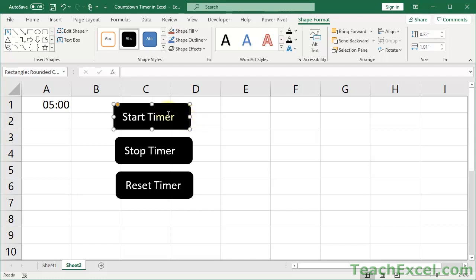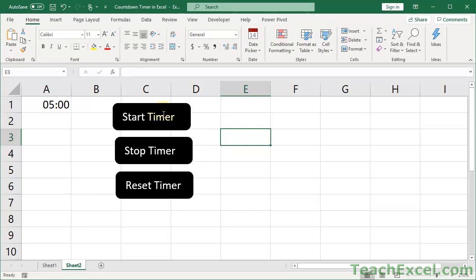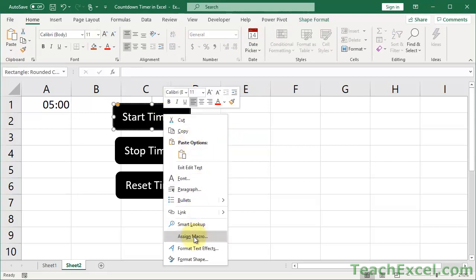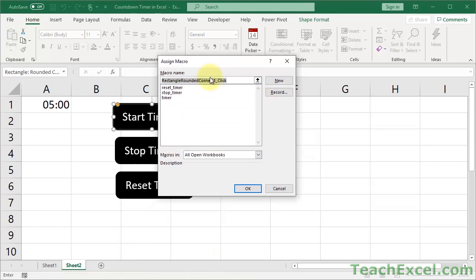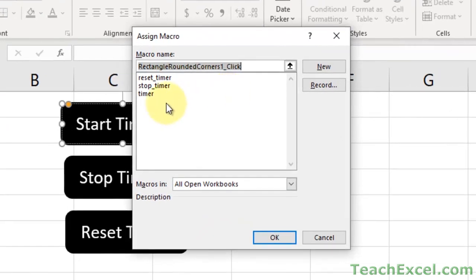And now what you have to do is to assign the macros. So just right-click a button. Go to Assign Macro. And make sure to download this workbook so you can get all of these macros. And in the second half of the tutorial, I will cover them and tell you what's going on inside each one of them. The names are pretty self-explanatory. So let's go to Timer for Start Timer. OK.